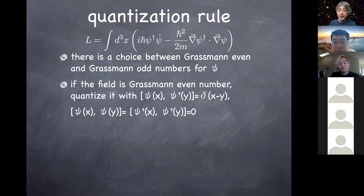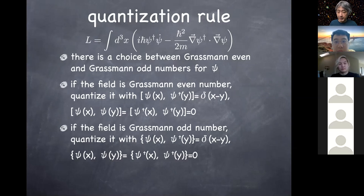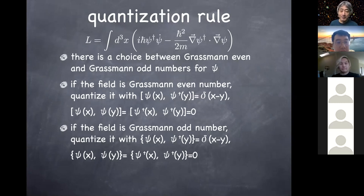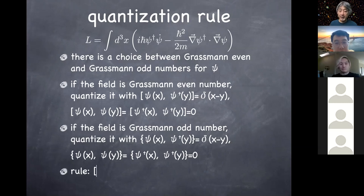But if psi is supposed to be a Grassmann odd number, then you quantize with anti-commutation relations. Again, absorbing √ħ puts ħ on the right-hand side, which vanishes in the classical limit where everything anti-commutes. So depending on whether the classical field psi is Grassmann even (ordinary number) or Grassmann odd, you introduce commutation or anti-commutation relations. That's the way we quantize the system.